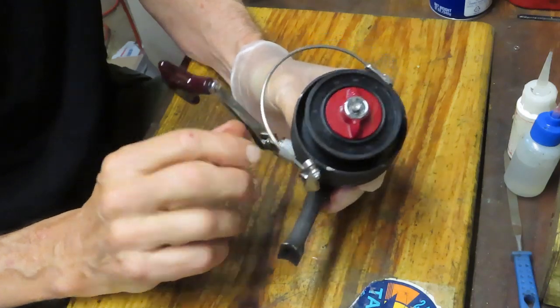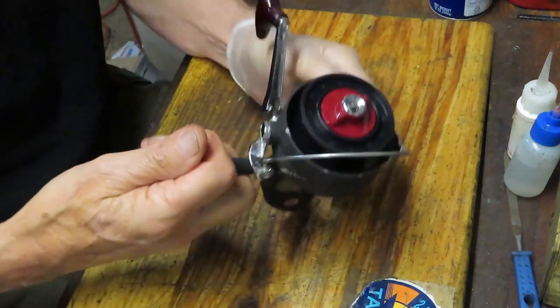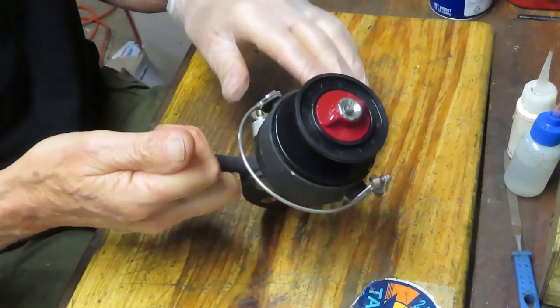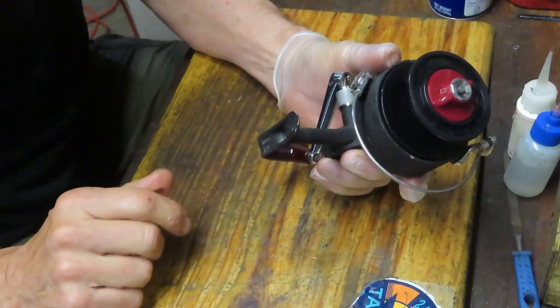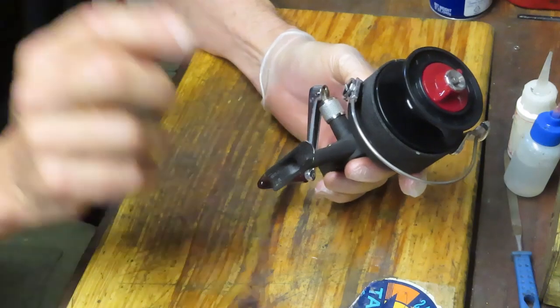We're going to take this reel apart, we're going to show you how to service it, we're going to show you how to keep it running for a long time to come. Just wanted to check the bail, I've checked the other pieces and parts, they seem to be okay. So let's get started.